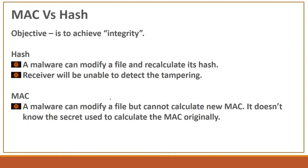Hash versus MAC — the objective is ultimately to achieve integrity. The packet traveling from one end to another should maintain its integrity. If the packet is modified, the receiver should be able to detect that it has been modified.